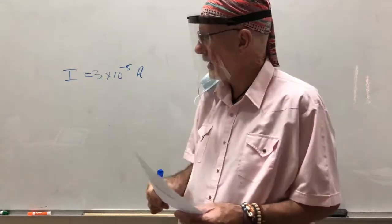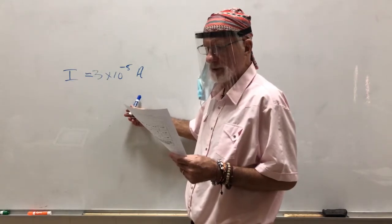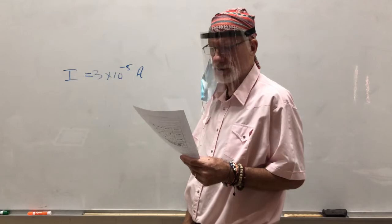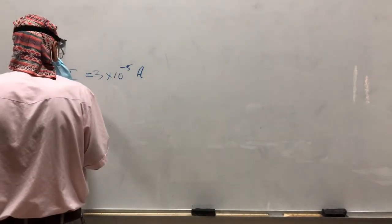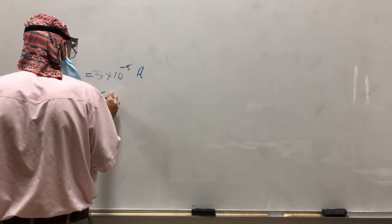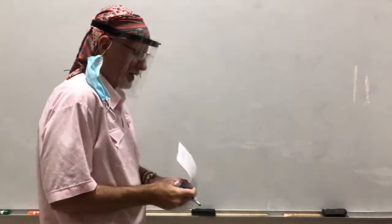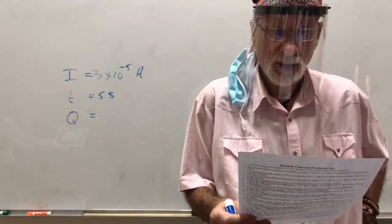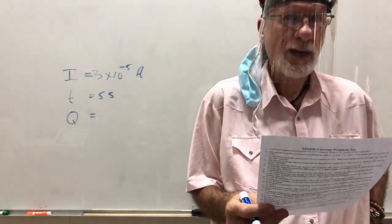So this is the charge, and what they're asking is, this is the current. They're asking for how much charge hits the screen in five seconds. So they're giving you the time, and that's going to be five seconds, and then they're asking you for Q. What is the relationship that equates Q, current, and time?